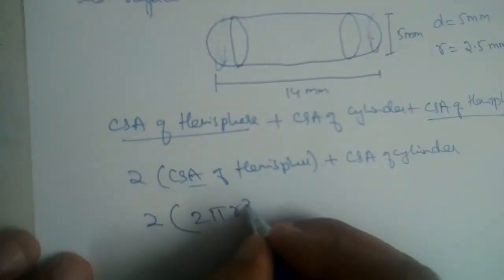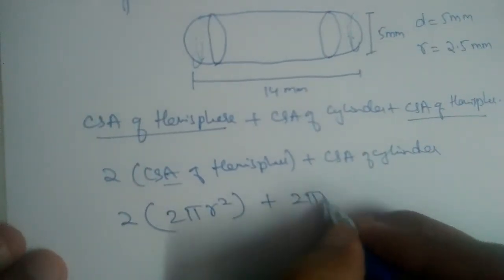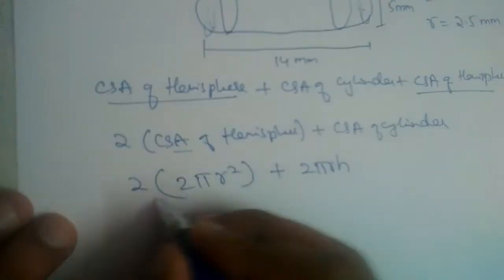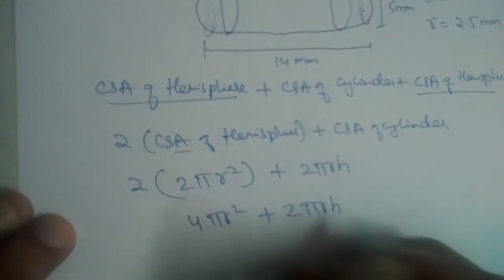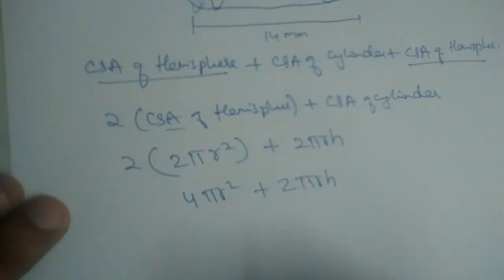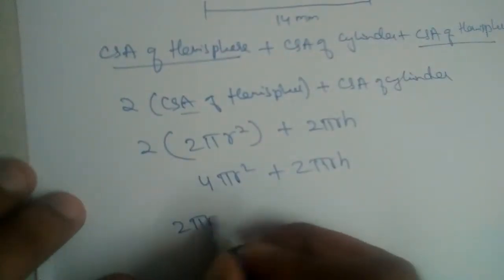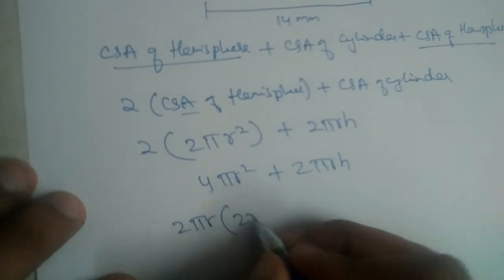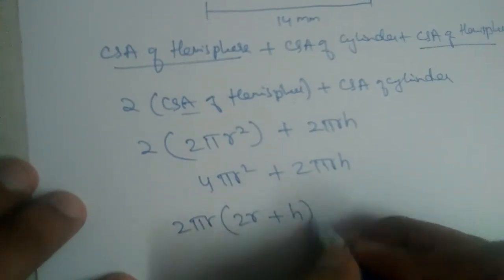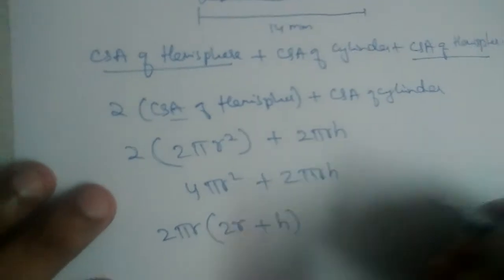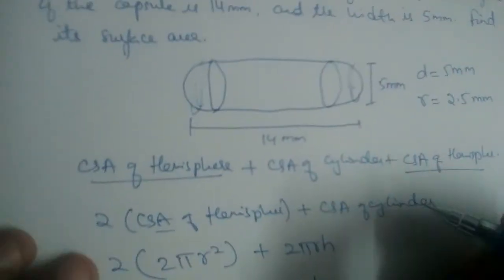So the total surface area is: CSA of sphere plus CSA of cylinder, which gives us 2 × 2πr² + 2πrh, simplifying to 4πr² + 2πrh. Taking 2πr as common, we get 2πr(2r + h).